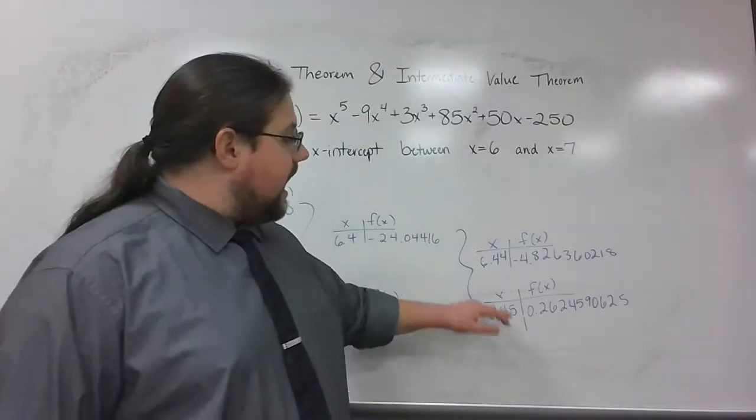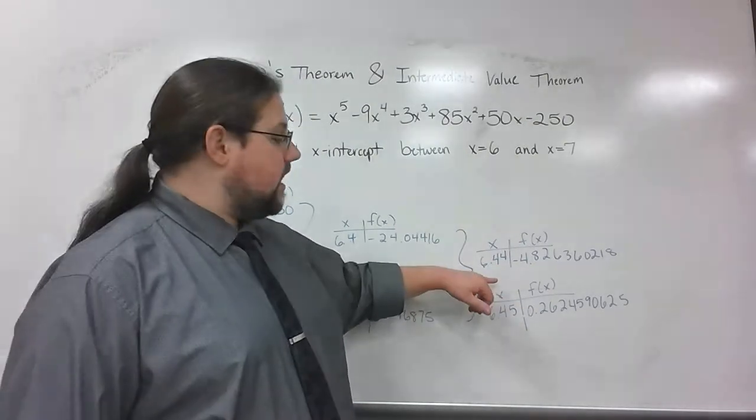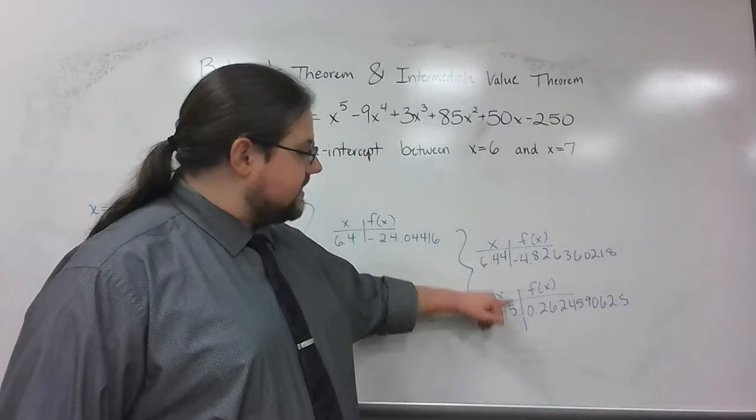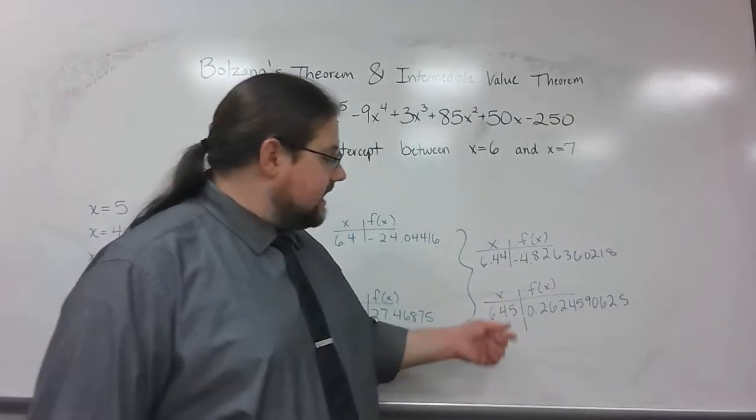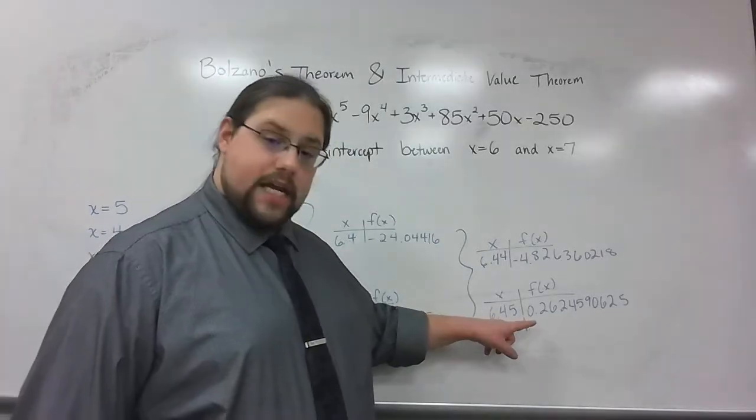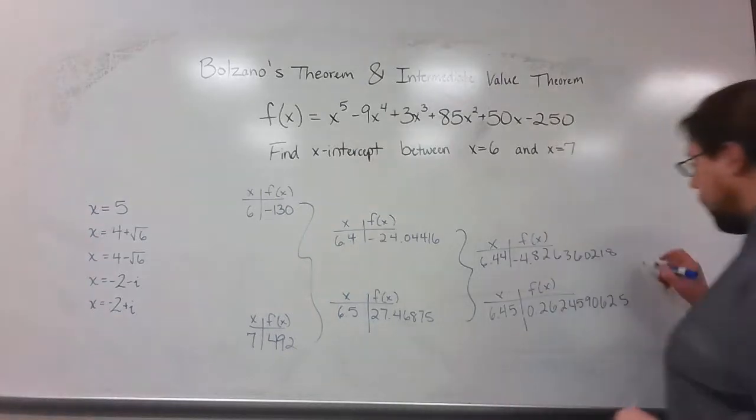Now, I'm going to go one step further. I don't want to just stop here. I'm going to go to three decimal places. So what I'm going to do is I'm going to pick a number between 6.44 and 6.45 and see what happens. Like I said, this is closer to 0. So I'm going to try something close to 6.45. And what I tried was 6.449.